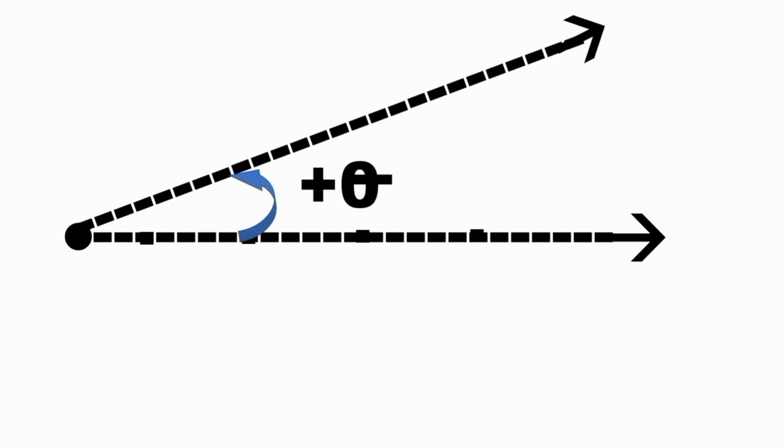Measuring the angle in counterclockwise direction, angle theta is positive. Angle theta is the universal symbol for angle, but we can also use any letter in the alphabet, number, or Greek letter.